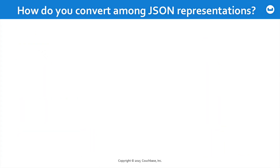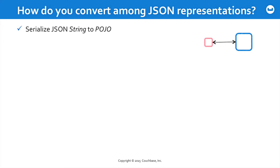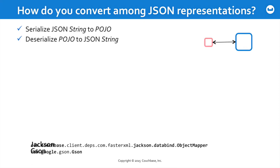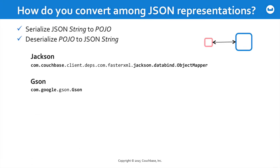So how do you convert among JSON representations? If you need to serialize a JSON string to a plain Java object — a POJO — or the reverse, there are many ways to do it. In our SDK, we embedded the Jackson data bind package, which has the ObjectMapper class that can handle this for you. There's also Gson, a whole library supported by Google, exactly for this purpose.